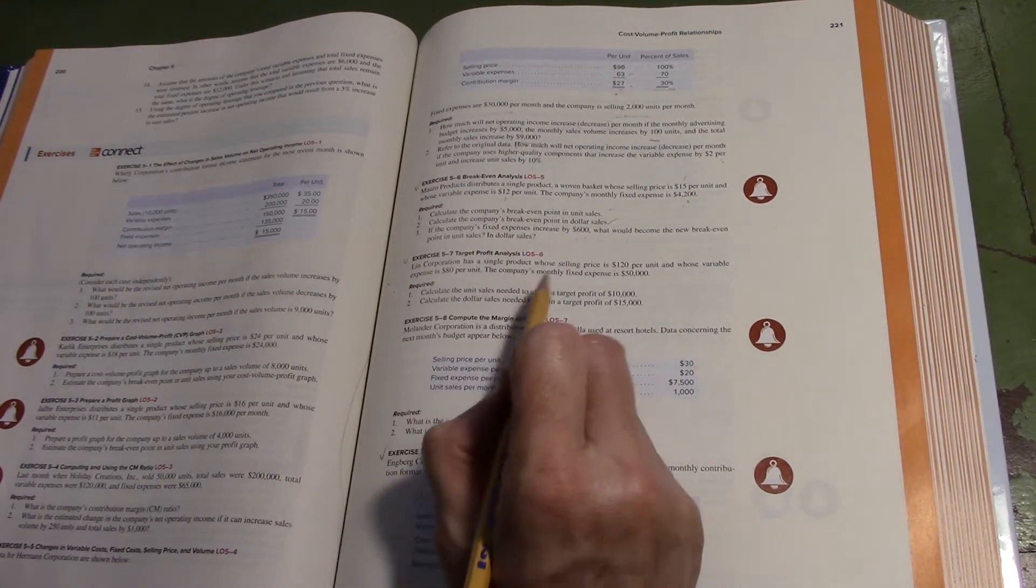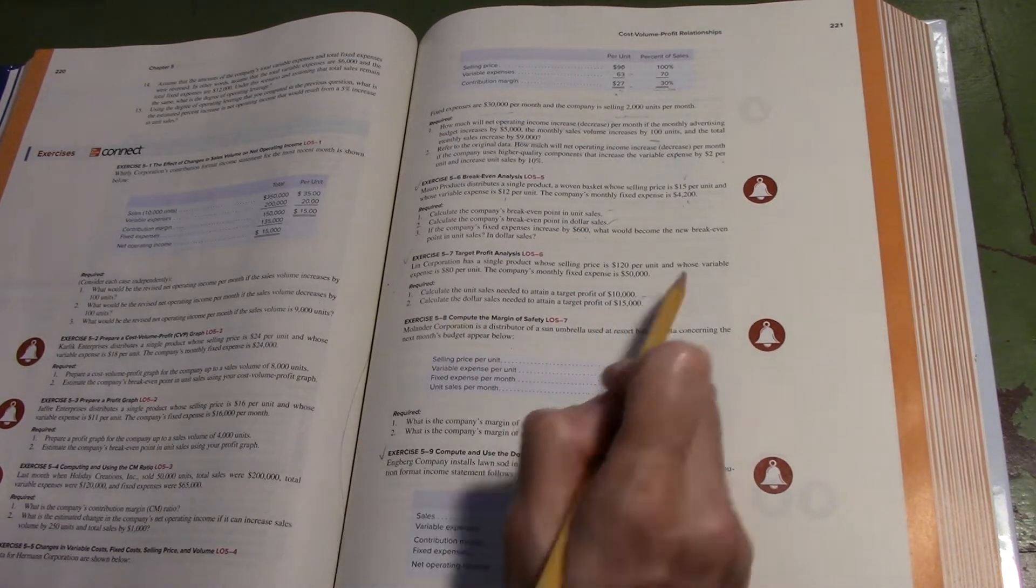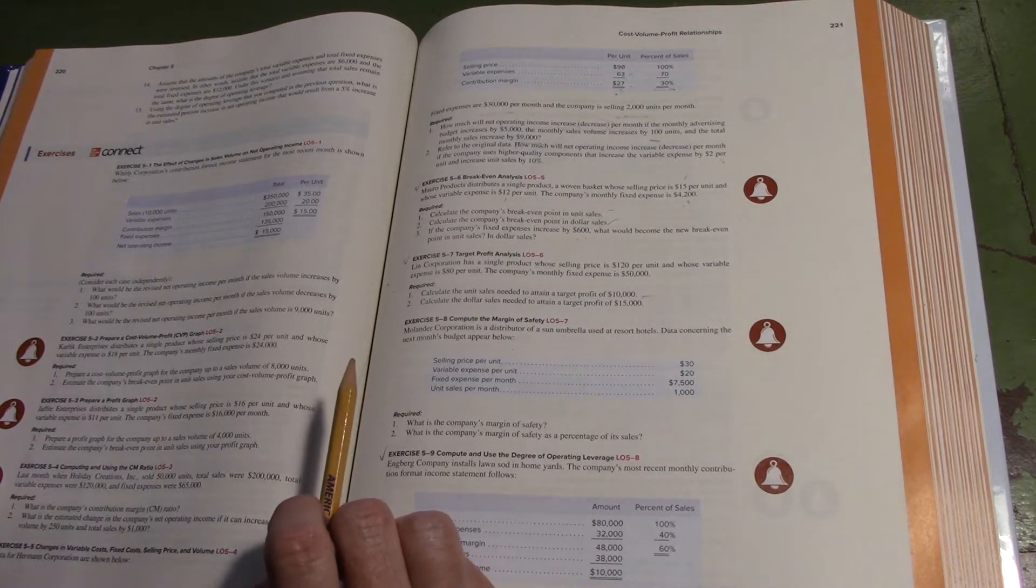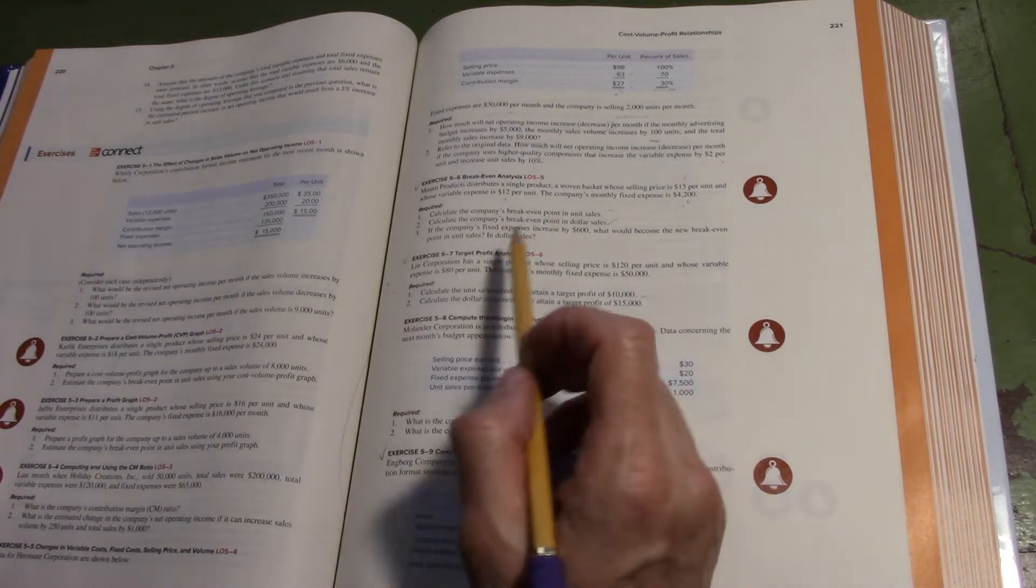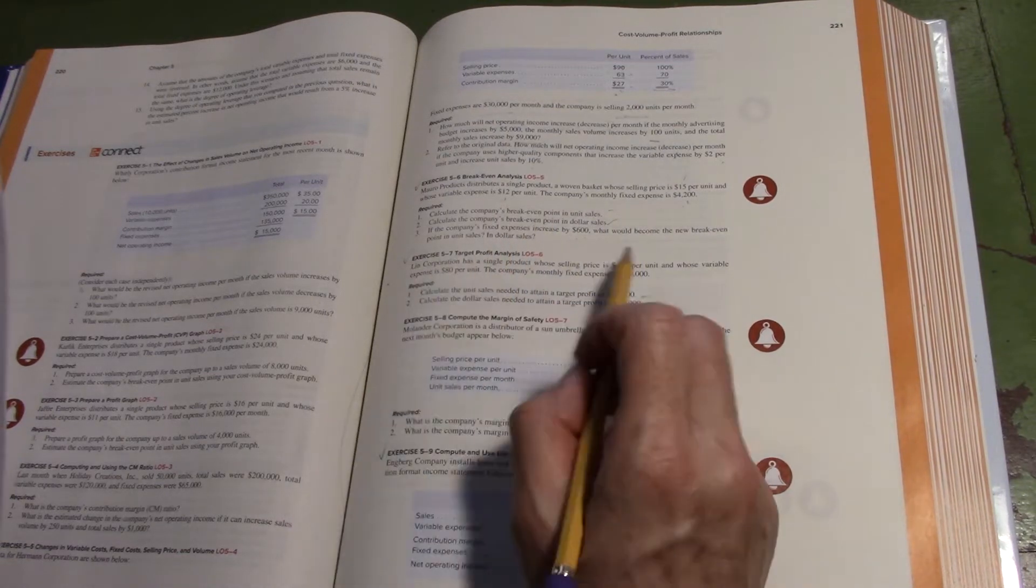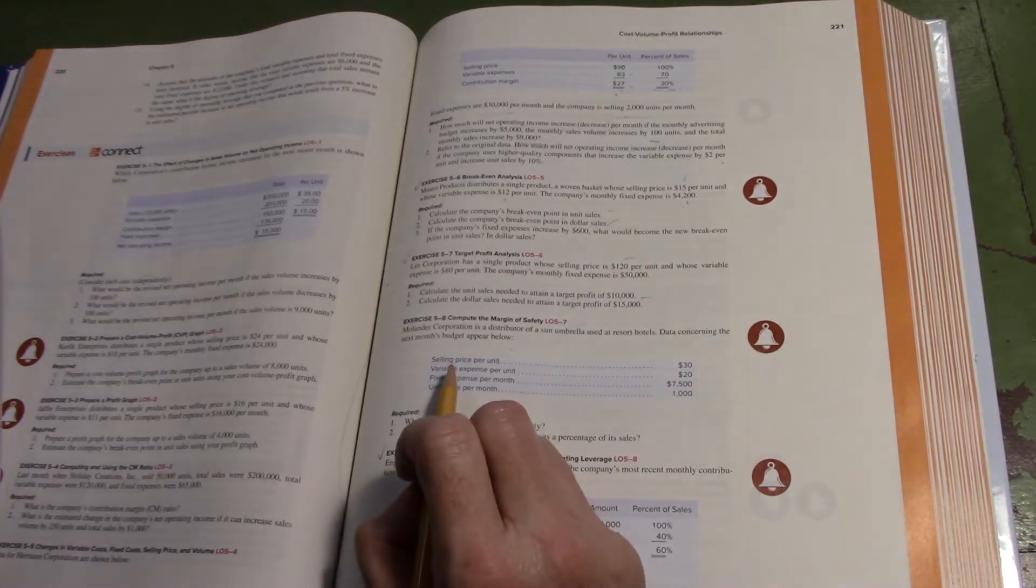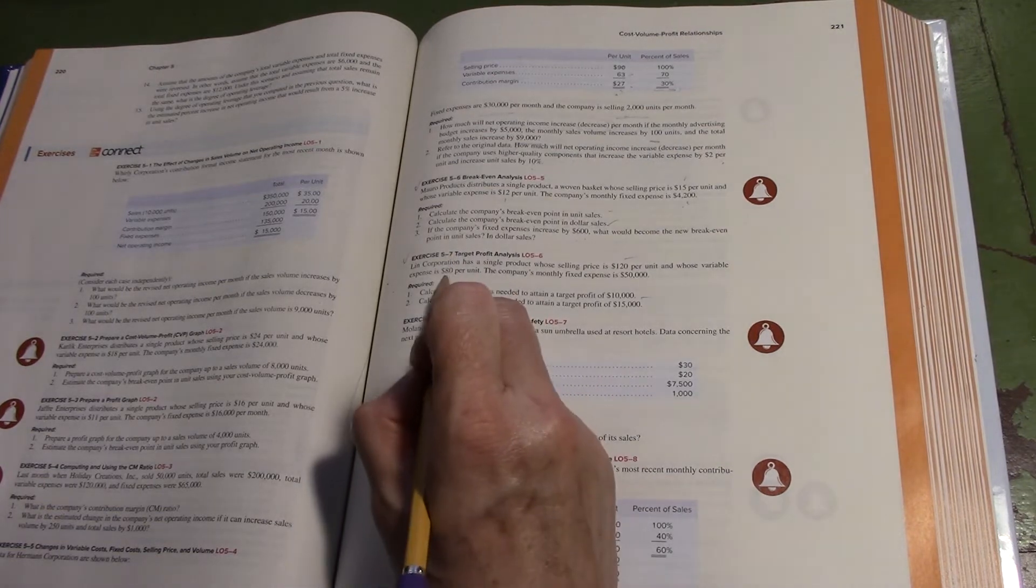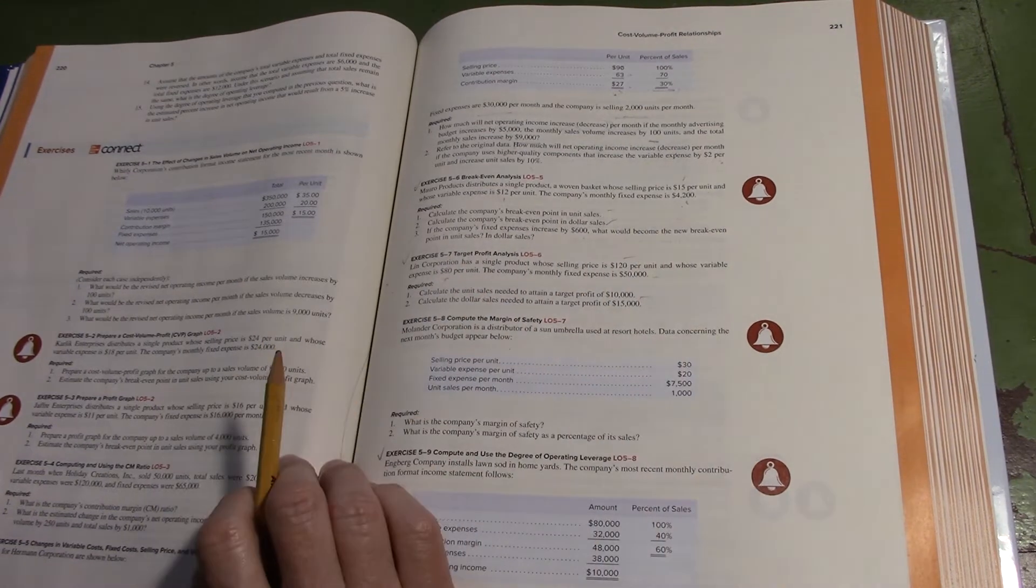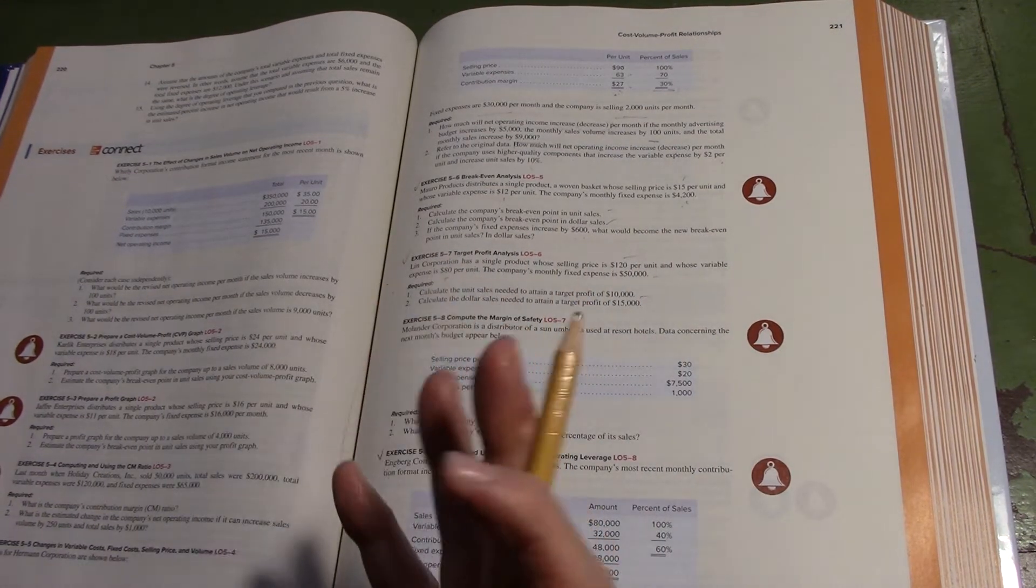Calculate the unit sales needed to attain a target profit of $10,000. We need to know what they're selling for. We've got 120 for selling price, variable is 80, fixed is 50,000. Very simple.